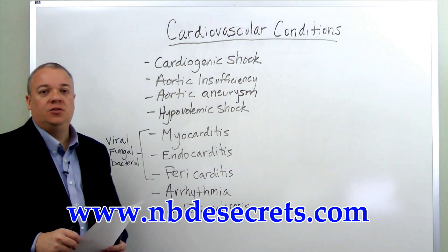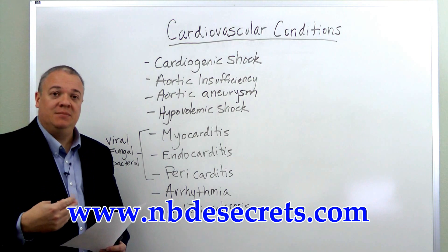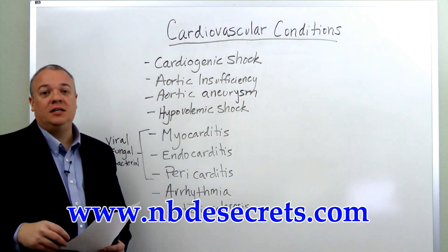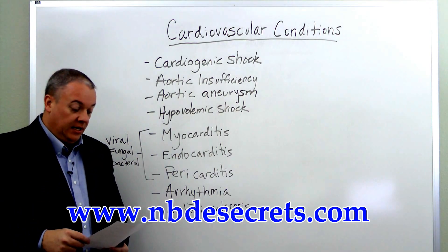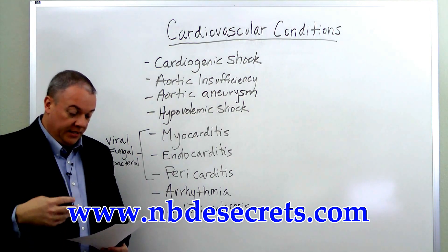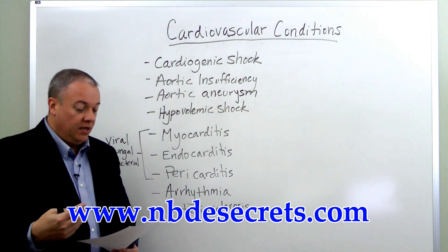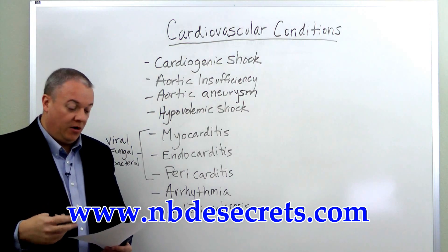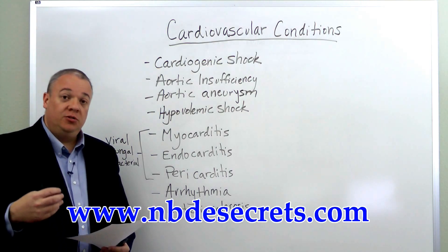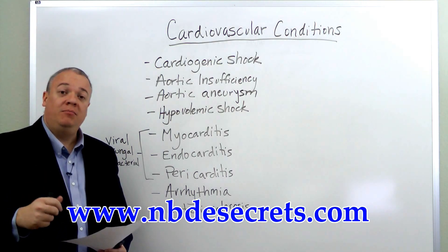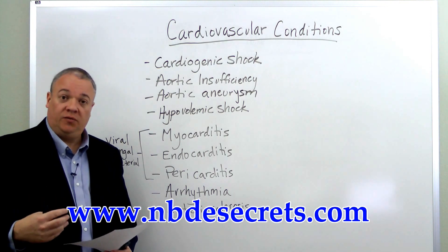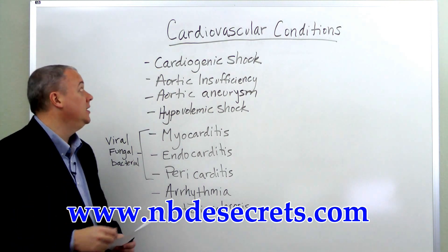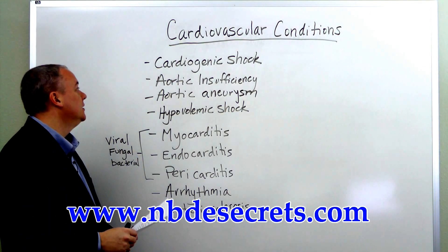Cardiogenic shock is a situation where the body is placing demands on the heart that the heart is unable to meet for various reasons. The body is demanding more blood, demanding more from the heart, but due to electrical problems in the heart, conductive system failure, or heart muscle dysfunction, it's not able to meet those demands and it goes into cardiogenic shock.